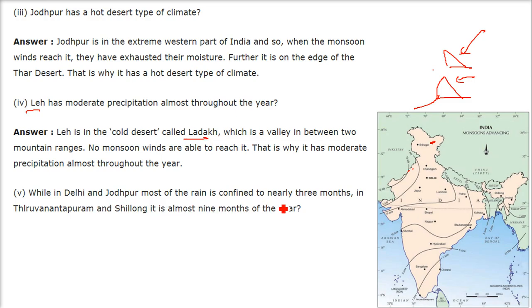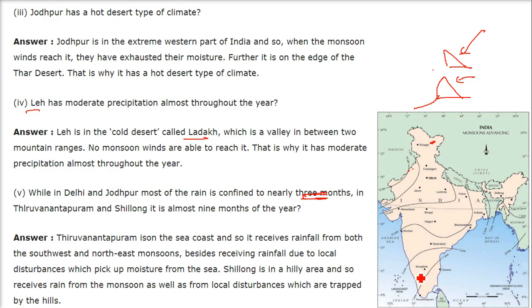While in Delhi and Jodhpur most of the rain is confined to nearly three months, in Thiruvananthapuram and Shillong it is almost nine months of the year. The reason is Thiruvananthapuram is at the sea coast and receives rainfall from both the southwest monsoon and the northeast monsoon, and besides that from local disturbances as winds pick up moisture from the sea. Shillong is a hilly area and receives rainfall from the monsoon as well as from local disturbances trapped by the high mountain hill areas.